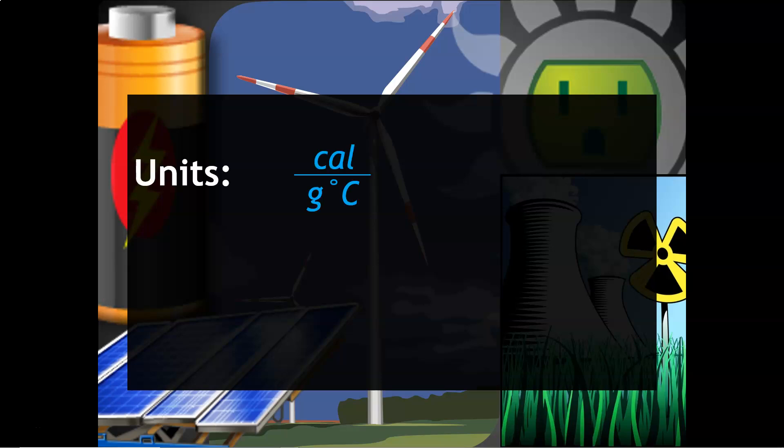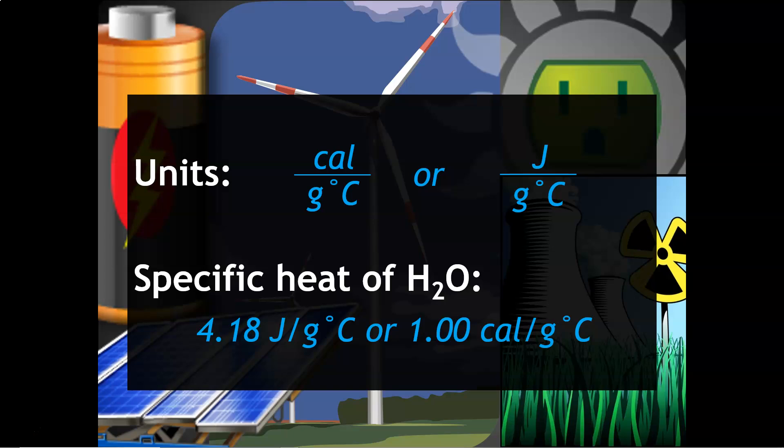Its units are calories per gram degree Celsius or joules per gram degree Celsius. The specific heat of water looks probably pretty familiar to you. It is 4.18 joules per gram degree C or one calorie per gram degree C.